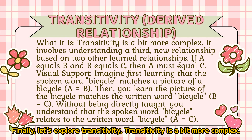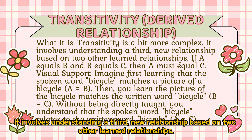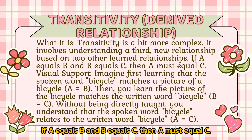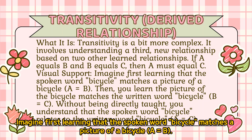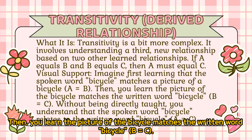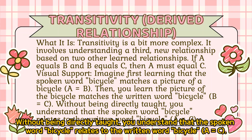Finally, let's explore transitivity. Transitivity is a bit more complex — it involves understanding a third, new relationship based on two other learned relationships. If A equals B and B equals C, then A must equal C. Imagine first learning that the spoken word 'bicycle' matches a picture of a bicycle (A-B). Then you learn the picture of the bicycle matches the written word 'bicycle' (B-C). Without being directly taught, you understand that the spoken word 'bicycle' relates to the written word 'bicycle' (A-C).